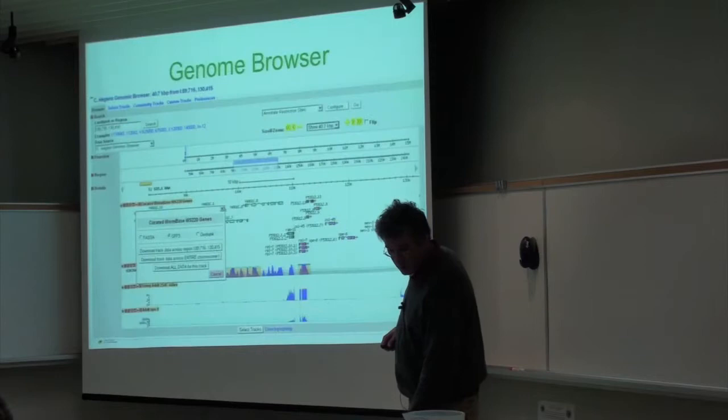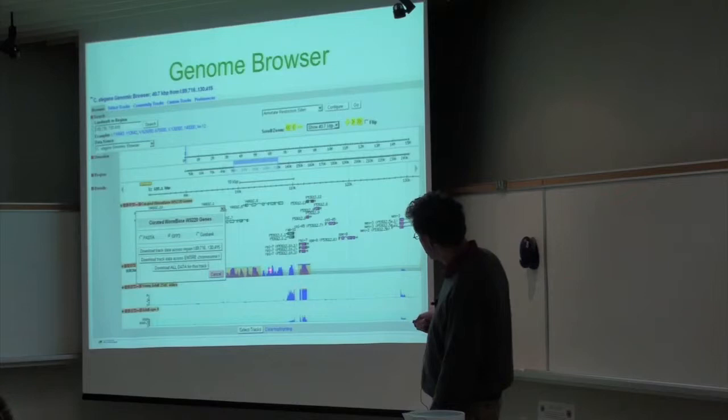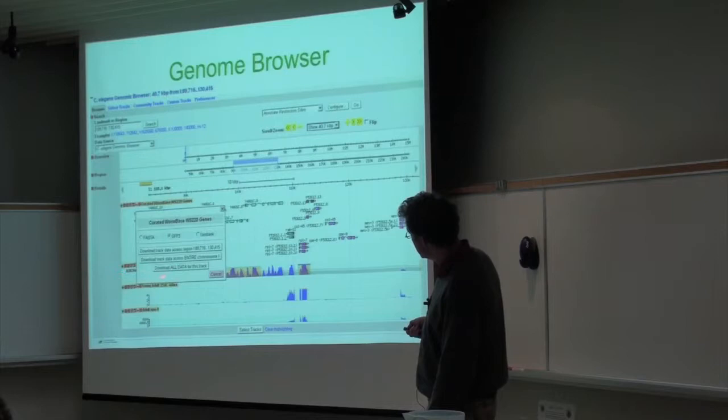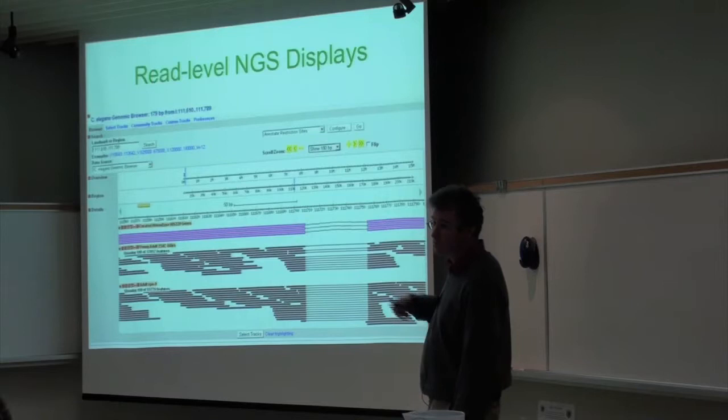The genome browser is based on the GBrowse model organism browser developed for WormBase — 10-year-old technology at this point, but it does the job. We created some specialized displays for ChIP-seq, added a one-click feature to download all data from a track, and added support for next-generation sequencing data so you can go down to individual bases and look at variants.